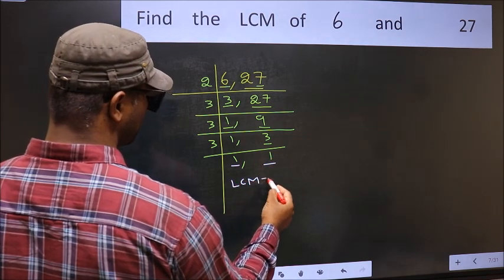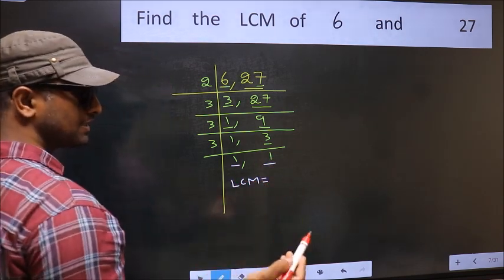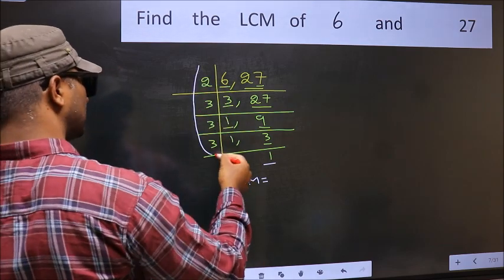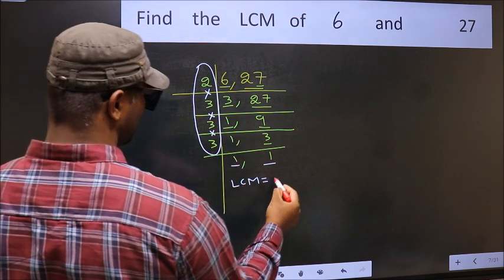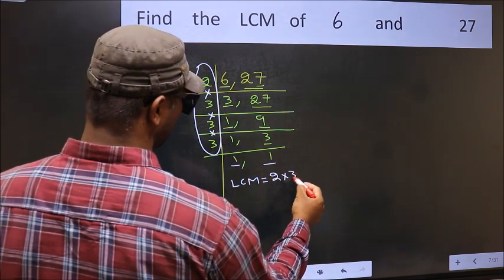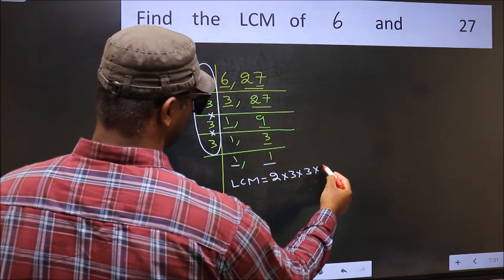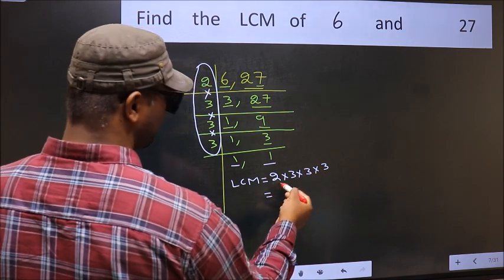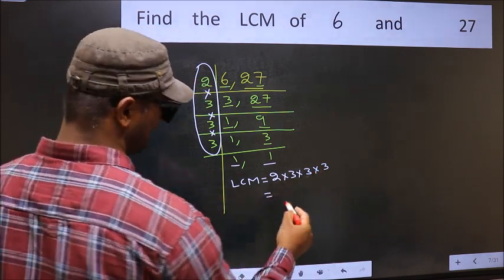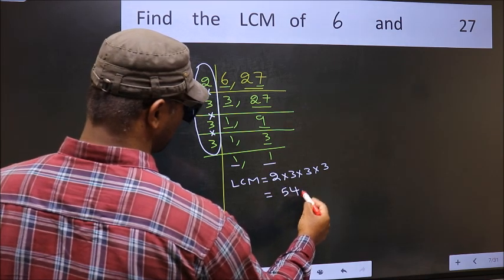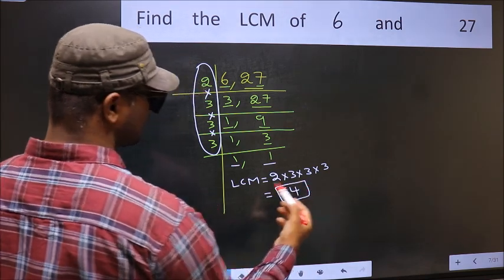So our LCM is the product of these numbers. That is 2 into 3, 3 into 3, 3 into 3. When we multiply these numbers, we get 54. That is our LCM.